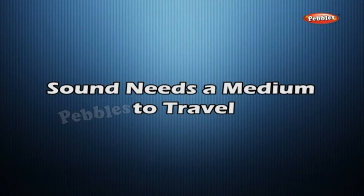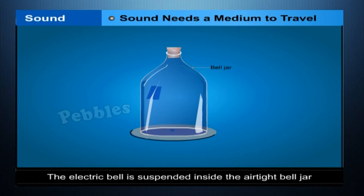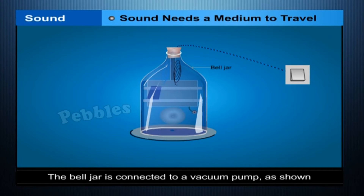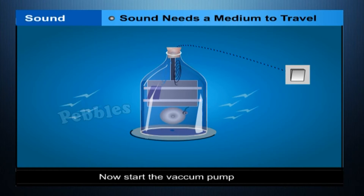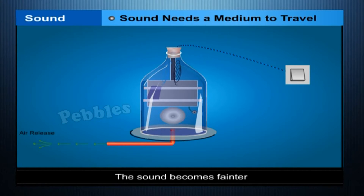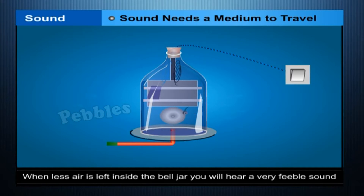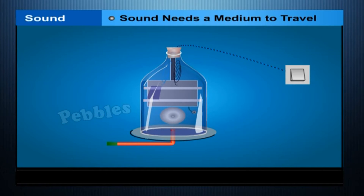Sound needs a medium to travel. Take an electric bell and an airtight glass bell jar. The electric bell is suspended inside the airtight bell jar. The bell jar is connected to a vacuum pump. If you press the switch, you will be able to hear the bell. Now, start the vacuum pump. When the air in the jar is pumped out gradually, the sound becomes fainter, although the same current is passing through the bell. After some time, when less air is left inside the bell jar, you will hear a very feeble sound. We cannot hear any sound when air is removed completely, proving that sound does not travel in a vacuum.